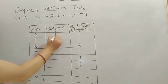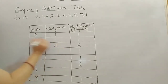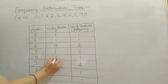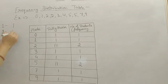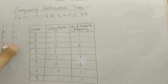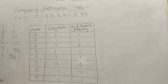Tally marks: 1 is represented with 1 standing line, 2 with 2 lines. But if you have 3, 4, 5, how to represent? For 1, tally mark is 1 line. For 2, tally mark is 2 standing lines. For 3, three standing lines. For 4, four standing lines. For 5, you draw 4 standing lines and then 1 cross line. This is for 5. Then for 6, first draw 5 and then 1 more. Like this you can extend it.